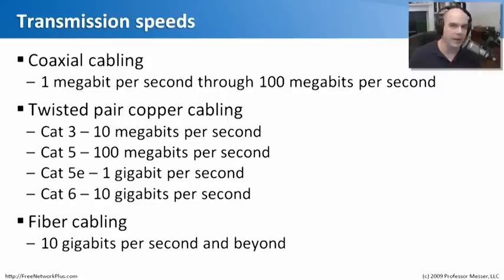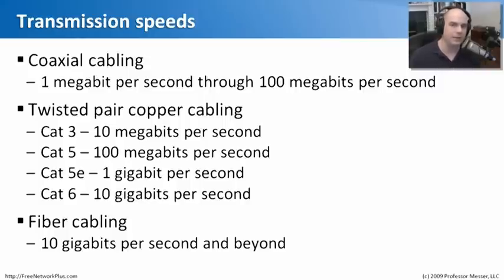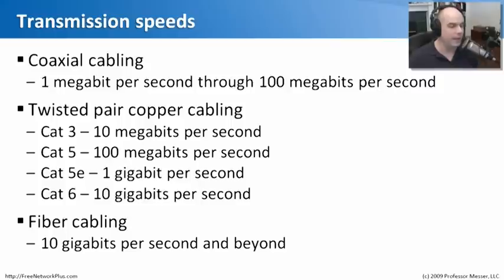Finally, there is fiber cabling. Fiber can go at extremely high rates of speed — generally we see fiber going at 10 gigabits per second and beyond. There are other types of frequency transmissions we can put on fiber using different types of signaling and different colors of light across the fiber, which can really expand on those numbers. Generally we see about 1 to 10 gigabits per second, but certainly the capability exists within fiber to go much, much faster.